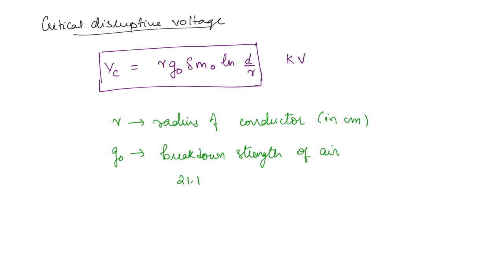This is 21.1 kilovolt per centimeter in RMS. This is in RMS value at normal temperature and pressure. Normal temperature and pressure we abbreviate as NTP. And what is delta?